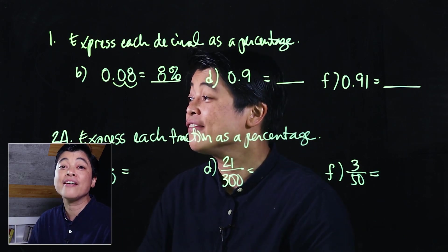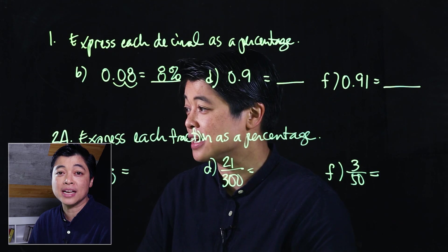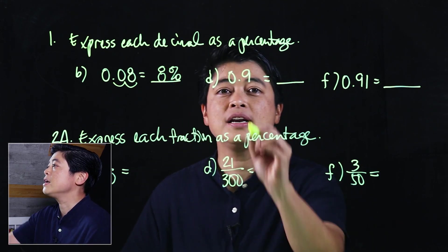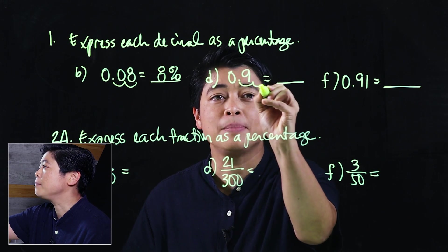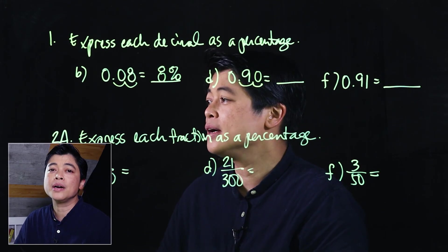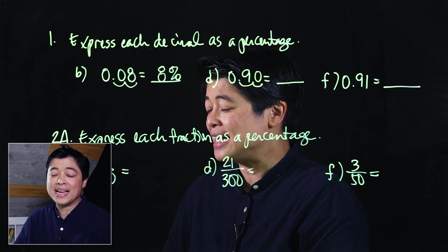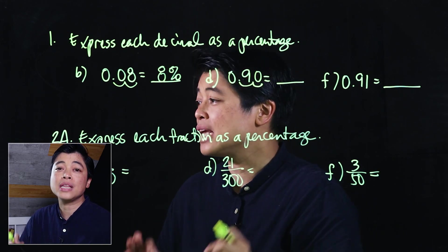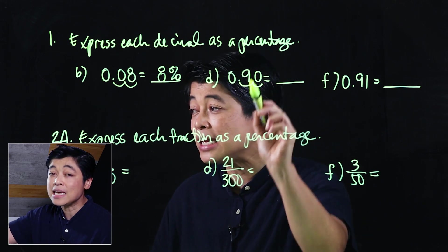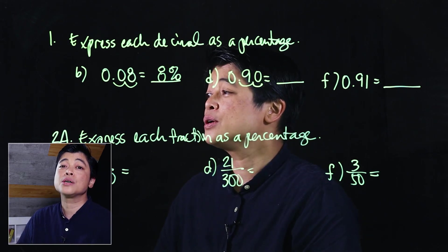The next one, if we move two decimal places we need to add a zero. Remember when a decimal place ends with a zero you technically don't have to show it anymore. So this is technically 0.90. When I move the decimal place of 0.9 two places to the right, that's equivalent to 90 and then we put the percent.